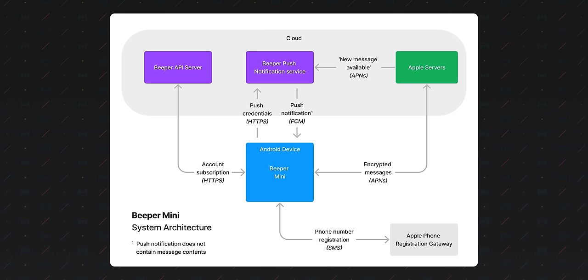They connect to Apple's servers on your behalf to listen for messages, and then they push them through Android's FCM notification system to your device. Beeper states that they can do this while maintaining complete privacy because they only receive the push credentials that don't give them access to message content, but do allow them to nudge the Beeper Mini Android app on your phone to — number one — wake up and open in the background.